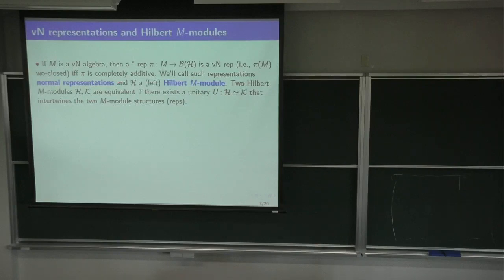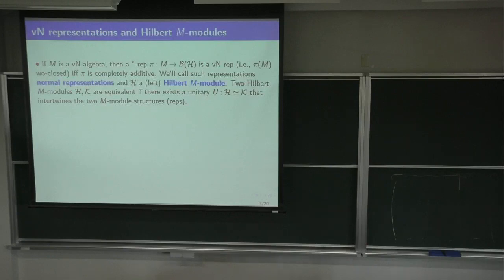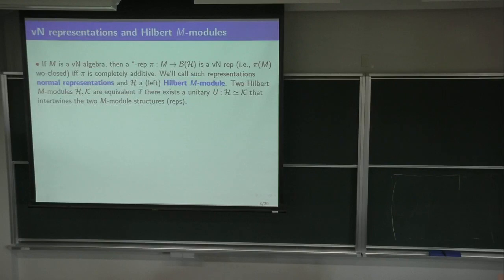The corresponding Hilbert space can be viewed as a Hilbert M-module — just as in group representation theory you can view group representations as modules. Here, the same way, you view the Hilbert space on which you represent as an M-module. This formulation — a Hilbert M-module — means the representation is normal.